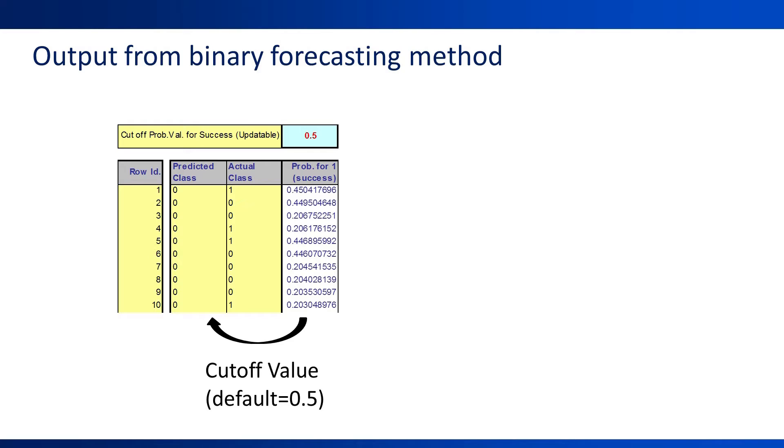A forecast error based on the binary forecasts can therefore take only one of three different values. It could be 0, it could be 1, or it could be minus 1. Combining these numbers into metrics such as MAPE, MSE, or MAD is therefore less useful.